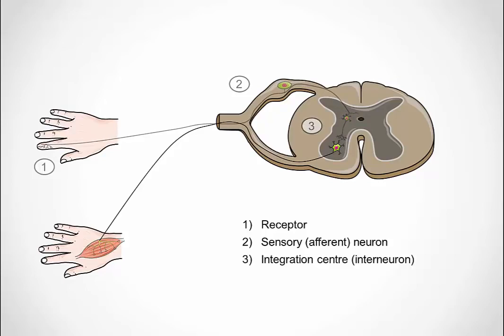Number three, the integration center. Here, the incoming electrical information from the sensory neuron is processed, sometimes by interneuron, and it transfers the electrical impulses to the lower motor neuron.